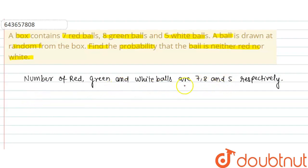So the total number of balls in the box equals 7 + 8 + 5 = 20. And here we have to find the probability that